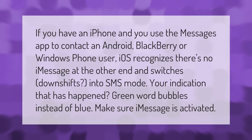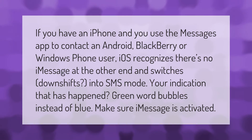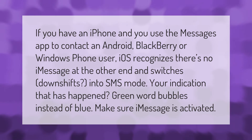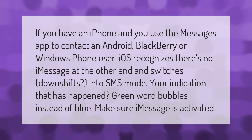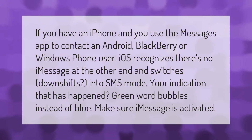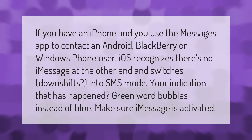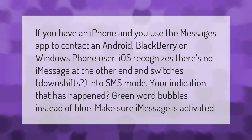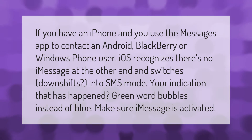If you have an iPhone and use the Messages app to contact an Android, Blackberry, or Windows Phone user, iOS recognizes there's no iMessage at the other end and switches — downshifts — into SMS mode. Your indication that this has happened is green word bubbles instead of blue. Make sure iMessage is activated.